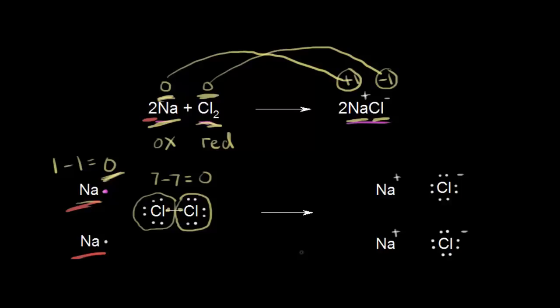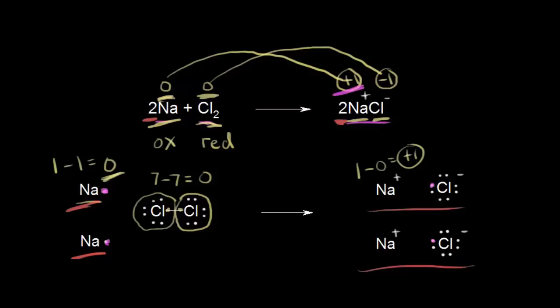That's the same result we get using the memorized rules. For the products, we have two sodium chlorides. The electron in magenta from each sodium atom transferred to a chlorine atom. Each sodium atom lost its valence electron, forming a cation. Sodium normally has one valence electron but lost it, so one minus zero equals plus one for the oxidation state. For chlorine, it normally has seven valence electrons but gained the one in magenta, giving it eight, so seven minus eight equals negative one. This shows why oxidation states equal the charge on monatomic ions.